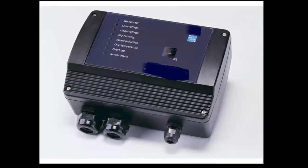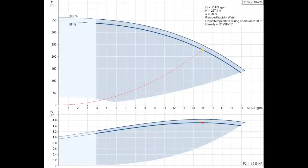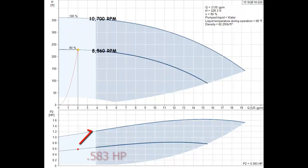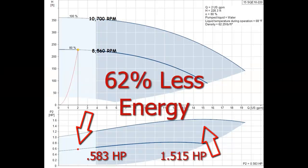A VFD causes the pump motor to be less efficient in several ways. In spite of these facts, many people will see the amp meter dropping from 1.515 horsepower at high flow and high RPM to 0.583 at low flow and low RPM and still say, look, the VFD is saving 62% in energy.